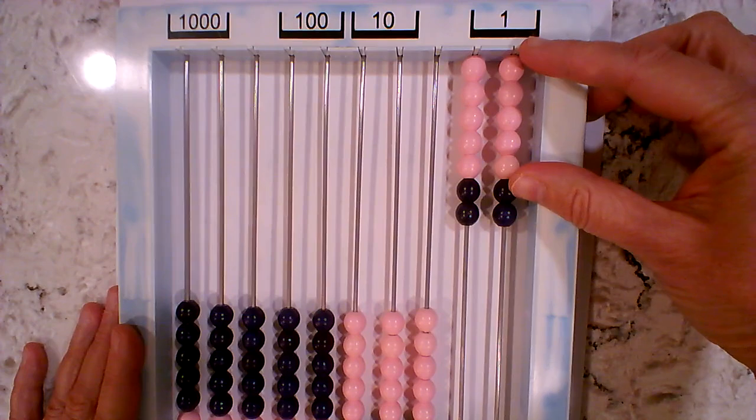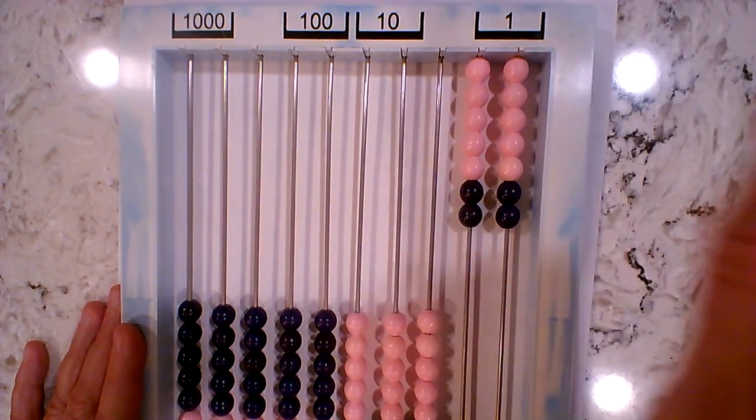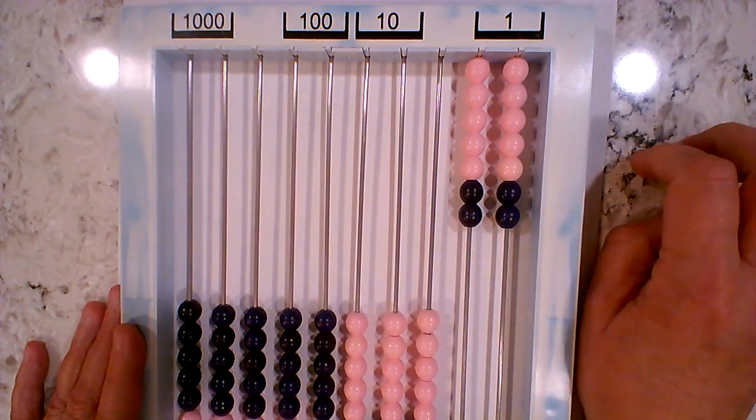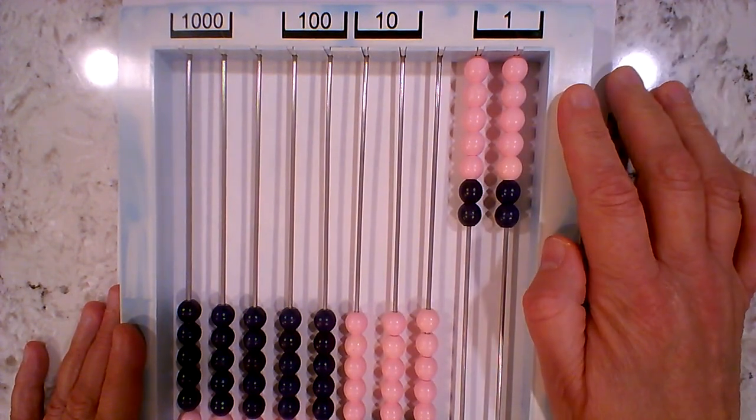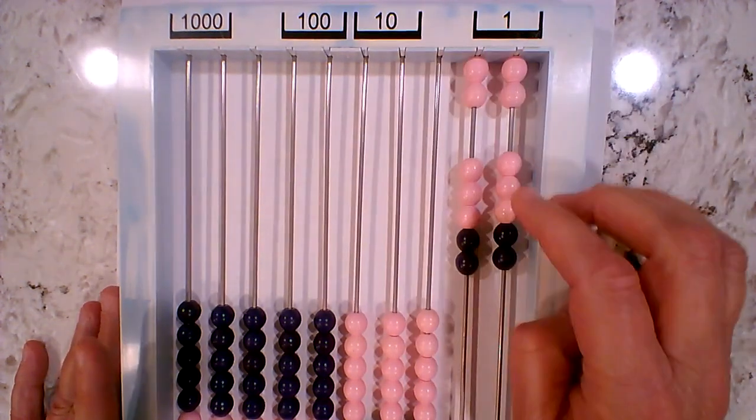When we see the quantities like this, we can see immediately that we have a ten, right? So we know immediately that we need to trade. Ten doesn't belong in the ones column; it goes over here in the tens column, so we're going to trade that.